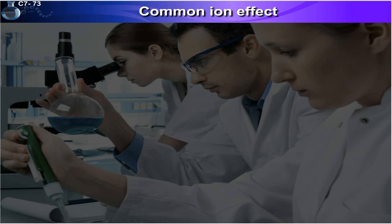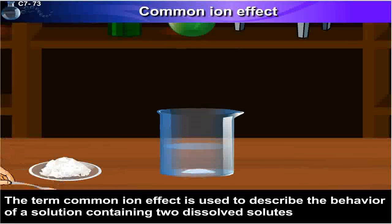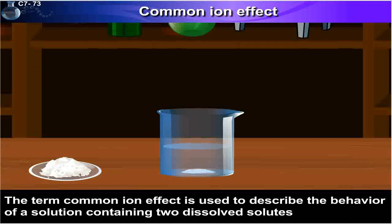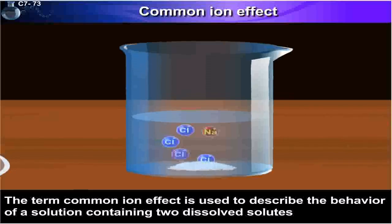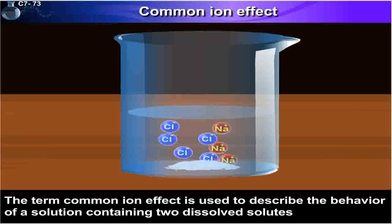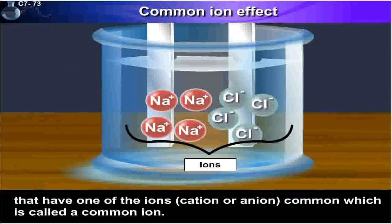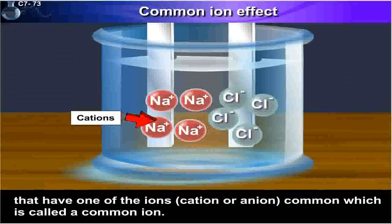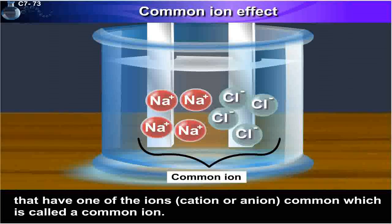Common Ion Effect. The term 'common ion effect' is used to describe the behavior of a solution containing two dissolved solutes that have one of the ions — that is, cation or anion — in common, which is called a common ion.